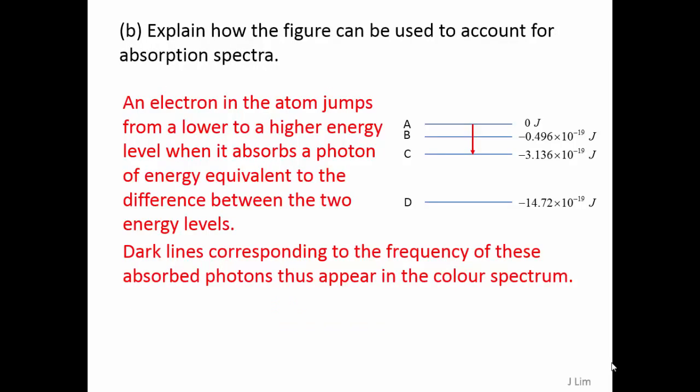An electron in the atom jumps from a lower to a higher energy level when it absorbs a photon of energy equivalent to the difference between the two energy levels. Dark lines corresponding to the frequency of these absorbed photons appear in the color spectrum.